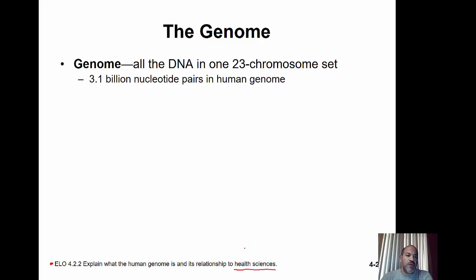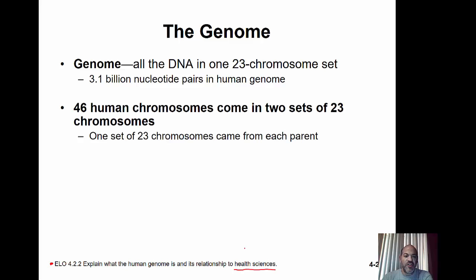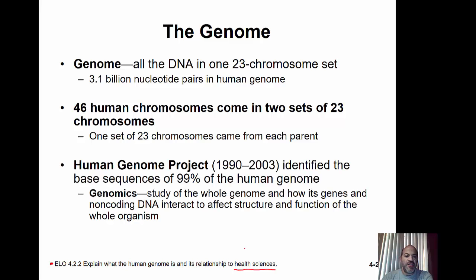Humans have 46 chromosomes — two complete sets, one from mom and one from dad. The Human Genome Project was completed in 2003 after 13 years of work, identifying 99% of the human genome and opening up the field of genomics. Genomics is the study of a whole genome and how its genes and non-coding DNA interact to affect the structure and function of the whole organism.